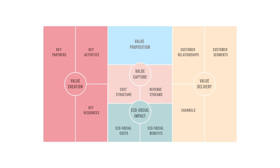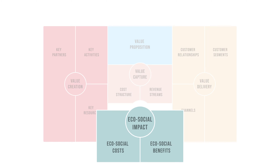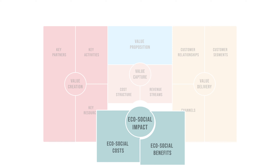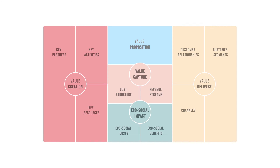However, the sustainable business model canvas adds a fifth section: the eco-social impact. Here it's described how your value proposition impacts your environment, partners, resources, and channels. In the eco-social costs, negative effects of the business model are captured, and in the benefits, positive effects are described.